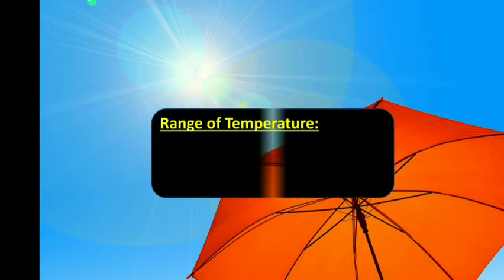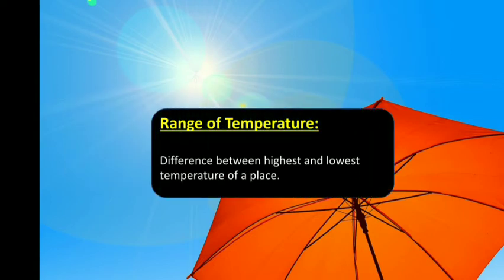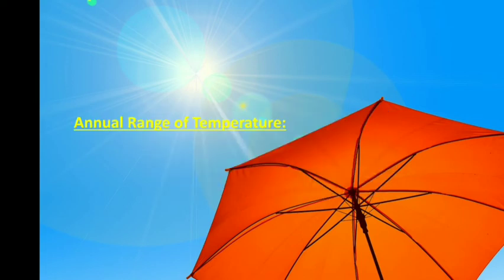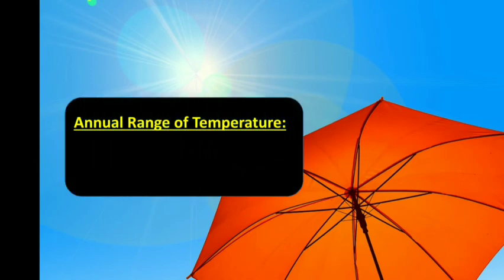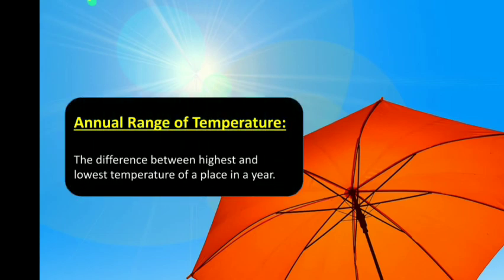Range of Temperature: the difference between the highest and lowest temperature of a place. Annual Range of Temperature: the difference between the highest and lowest temperature of a place in a year.